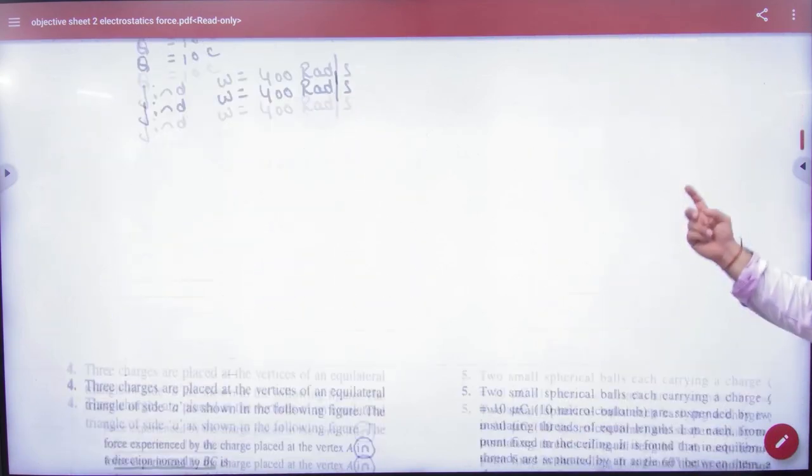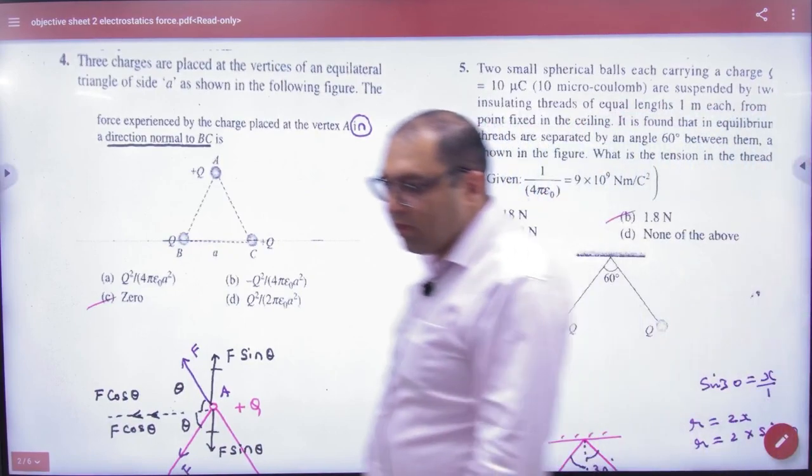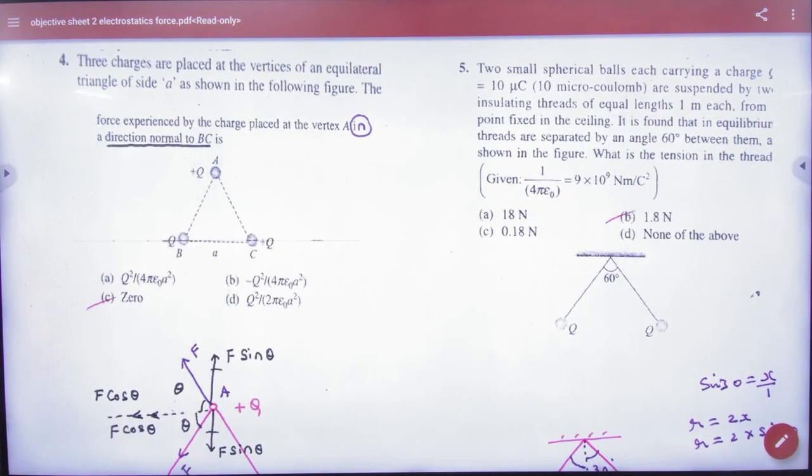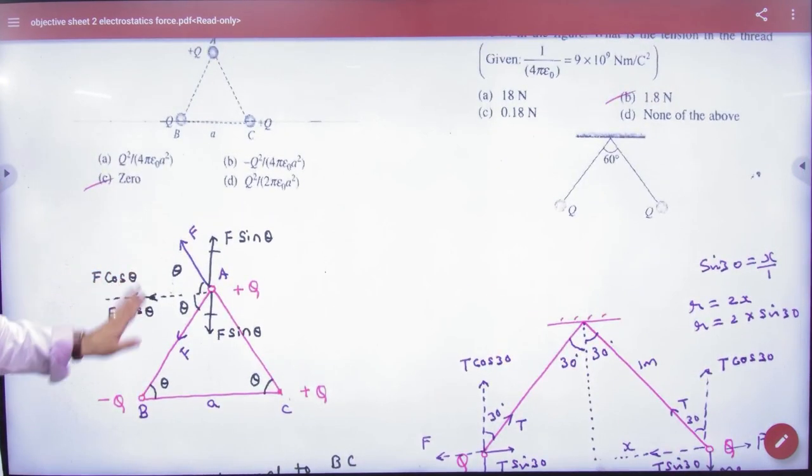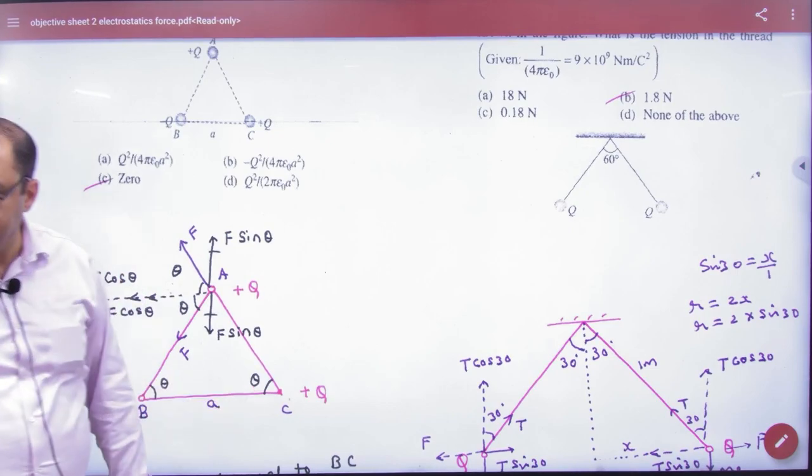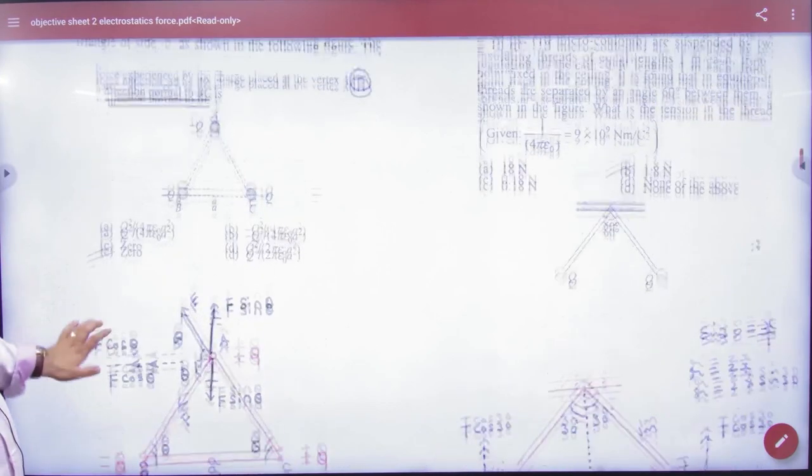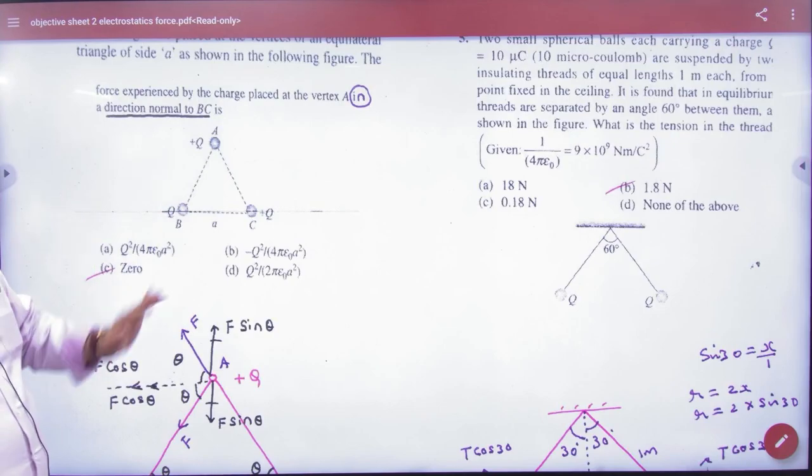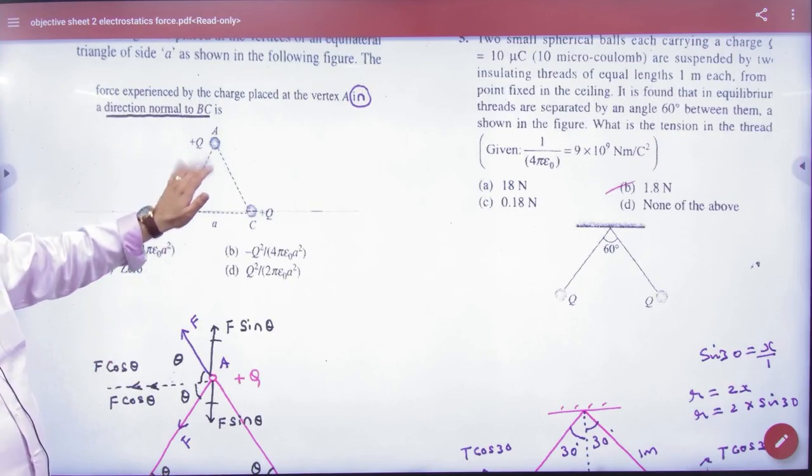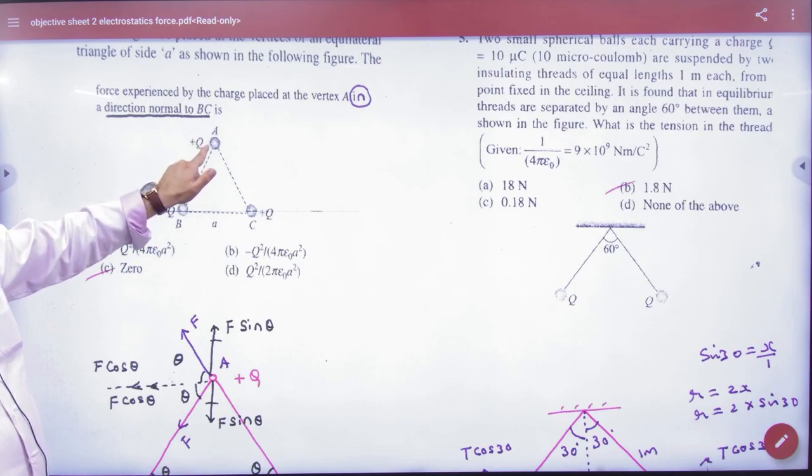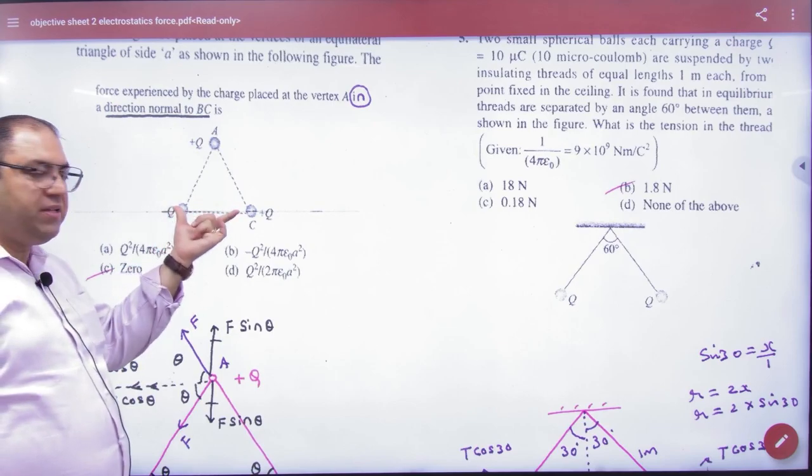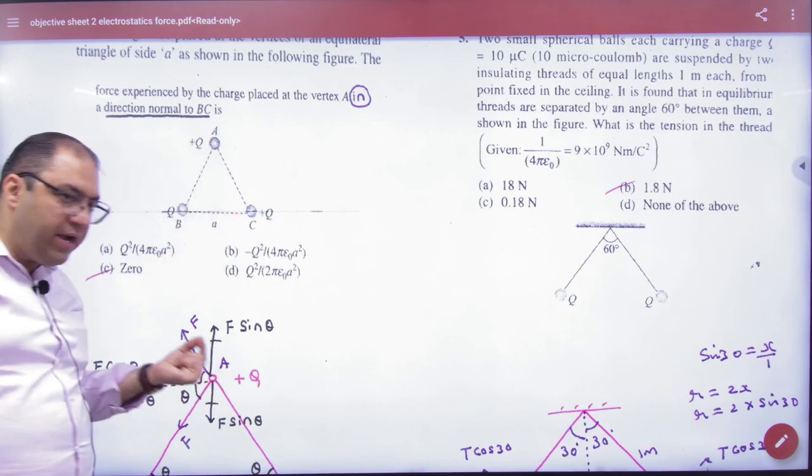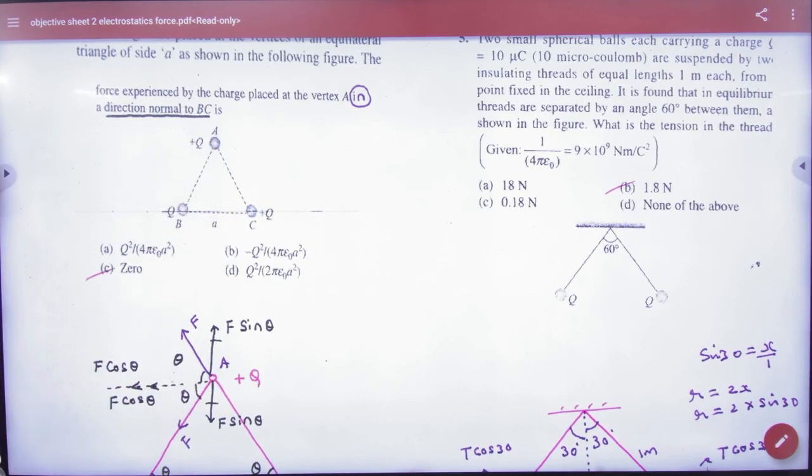Next, suppose this is a question, number 2. Of course we have to pay attention. He did not ask the net force or torque on this. He asked, what amount of force on a charge should be in direction normal to BC? So the force perpendicular to BC. This is the question. Are you clear?